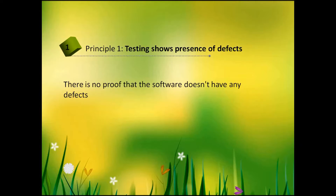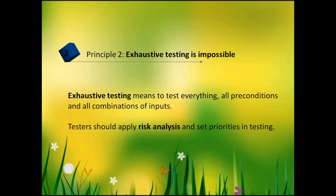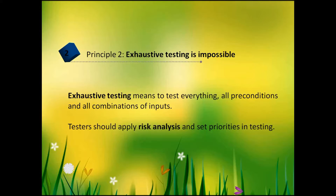Testing activities reduce the probability of undiscovered defects remaining in the software, but there is still a chance that they exist. The next principle: exhaustive testing is impossible. Exhaustive testing means testing everything — all preconditions and all combinations of inputs. First, it's not possible because there are so many that you can't identify all of them. Second, testing everything will be costly and time-consuming, so it won't be worth it.